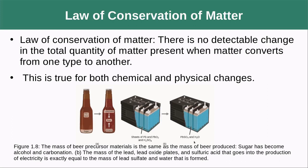Another example is a car battery. During the process of releasing electrical energy, lead gets converted to lead sulfate and water. But if you weigh the battery before and after, even though it has different contents, it weighs the exact same amount. For every bit of lead sulfate that gets produced, you consume some lead and sulfuric acid.